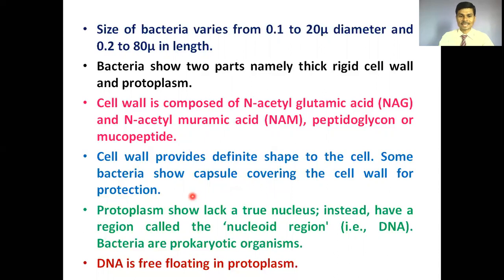The protoplasm shows no true nucleus — there is no nuclear membrane or definite nucleus. There is an absence of a definite nucleus in the protoplasm of the bacterial cell, but DNA is still present. That DNA is free-floating in the protoplasm, and the region where bacterial DNA floats is called the nucleoid region.